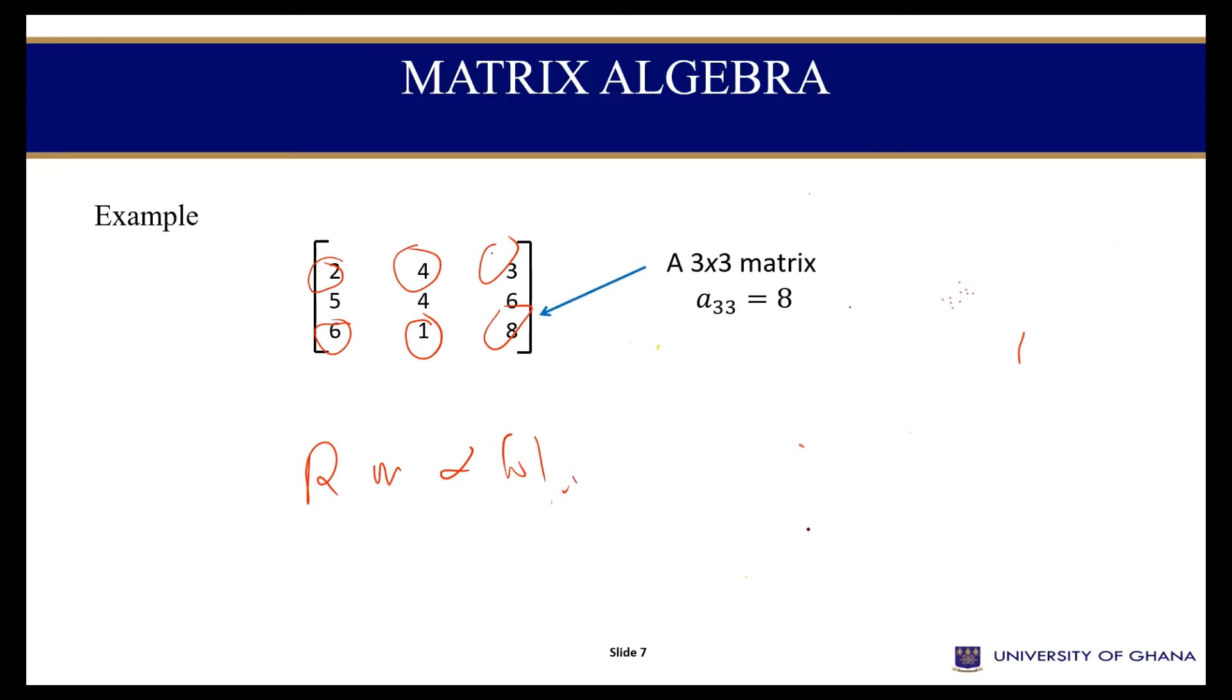So let's look at this. A_33. A_33, that is element 8. 8 is in row 3, column 3. What about this 4? What row and what column can we find this? Row 2, column 2. So 4 is in row 2, column 2.